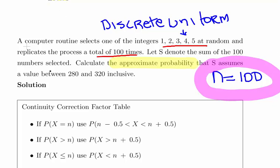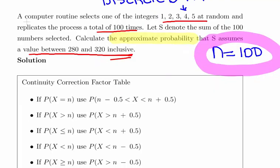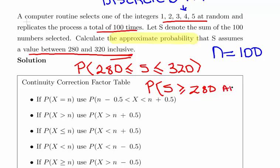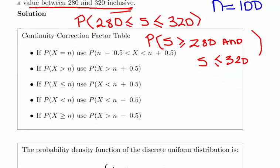We're told assuming a value of 280 and 320 inclusive. So that's asking us for a probability of 280 less than or equal to S less than or equal to 320. It's very important to know these correction factors and what to do.